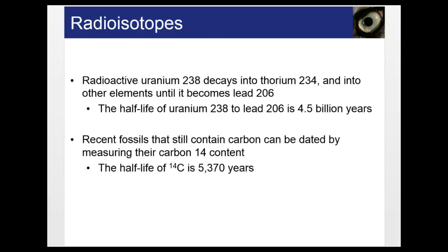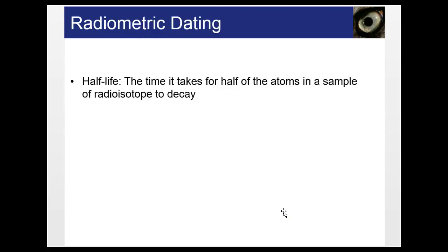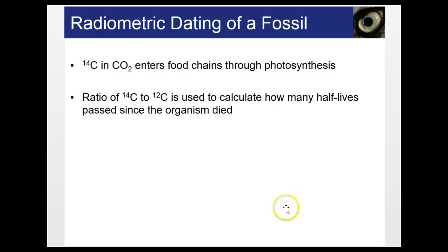Uranium is a common one — it decays into thorium and other elements until it becomes lead. Looking at that proportion, we can date things to 4.5 billion years. We can also use carbon, but carbon-14 can only date things to about 5,300 years or so. Remember, carbon is the important atom that makes up all living things because of the four bonds it can make, so this is useful for looking at when organisms died, as long as it's within that 5,000–6,000 year time frame. Organisms like the ice man can be dated with carbon dating.